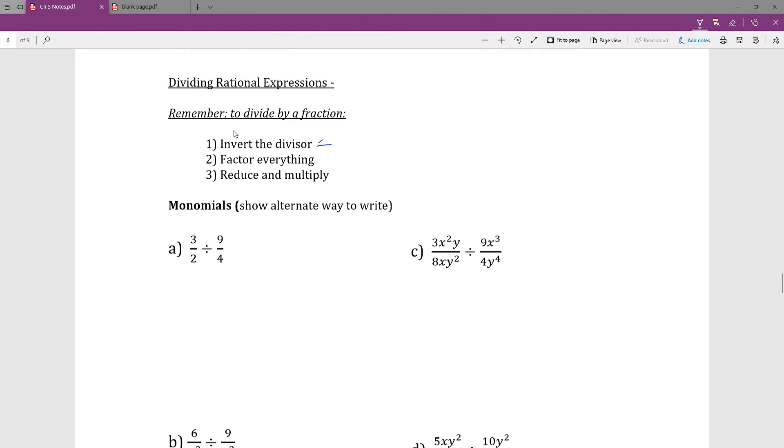So this is what it's saying: you invert the divisor, factor, reduce, and multiply. And so it's really the same as what we were doing before. Factoring and reducing is the key to this, but you do need to rewrite.